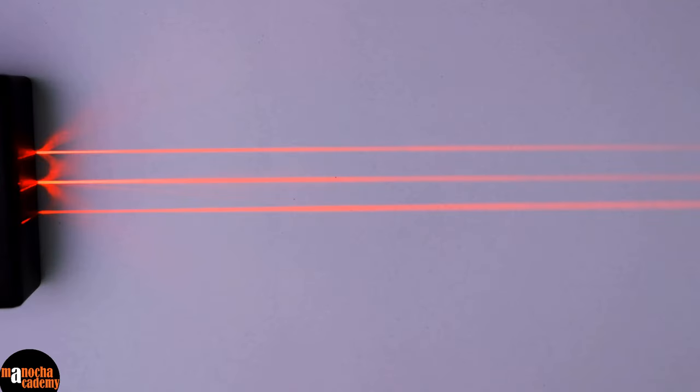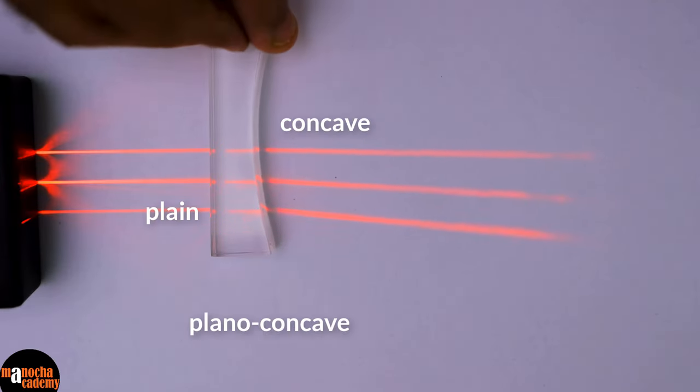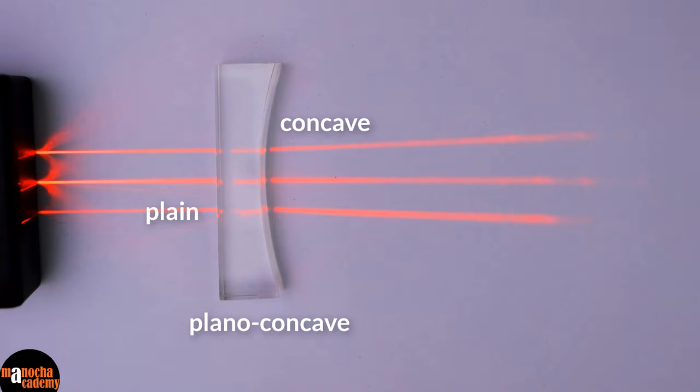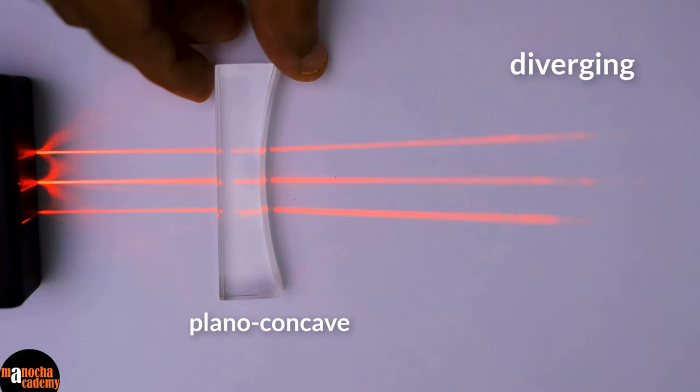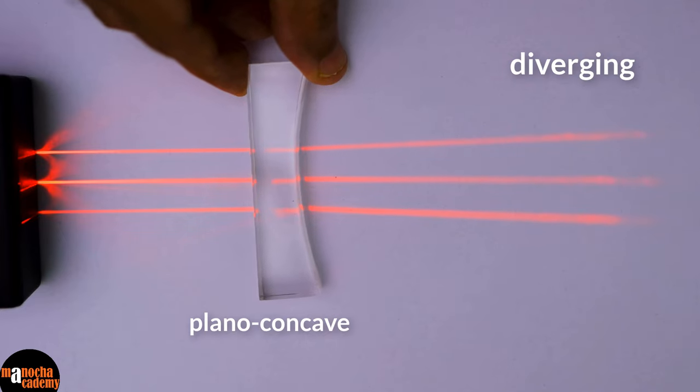Now let's try a Plano-Concave lens. It is plane on one side and concave on the other side. As we expect, it is diverging the light rays just like a concave lens.